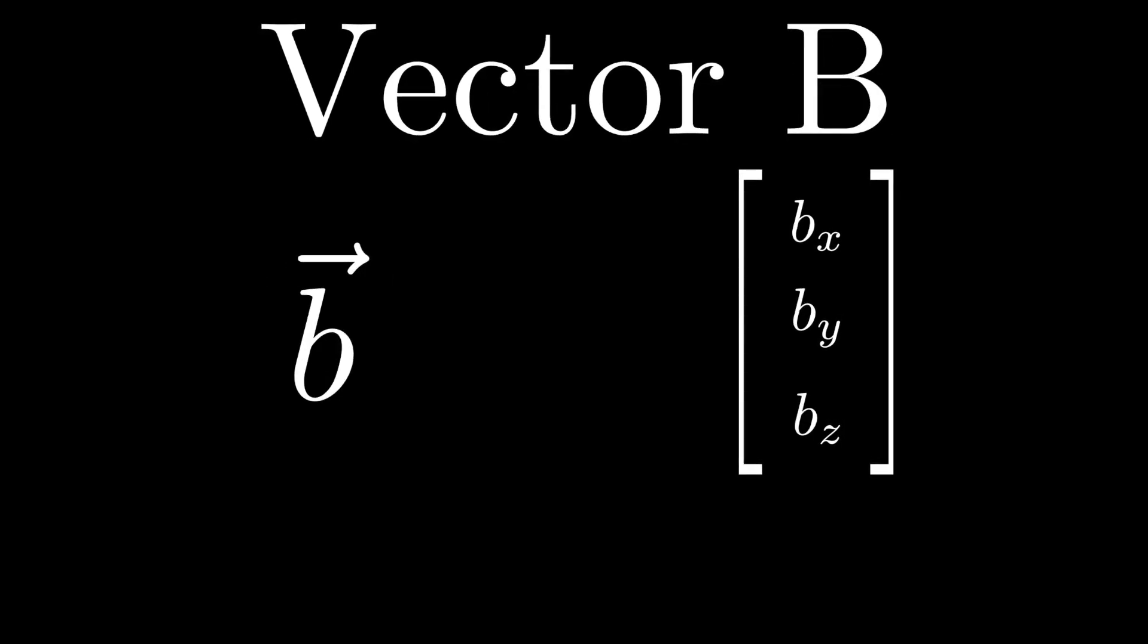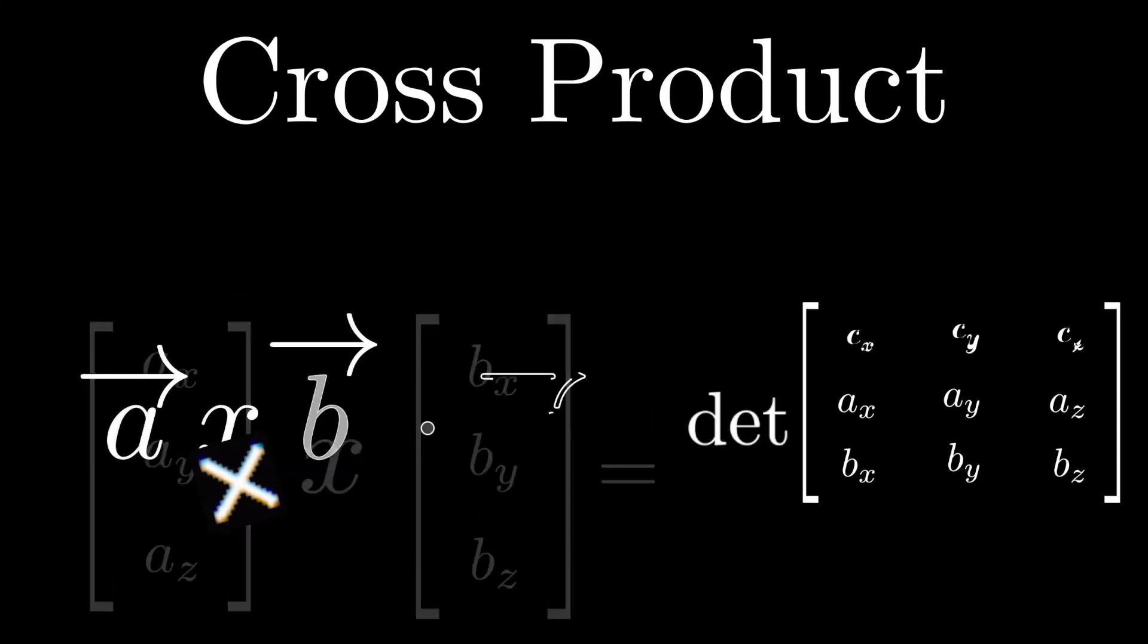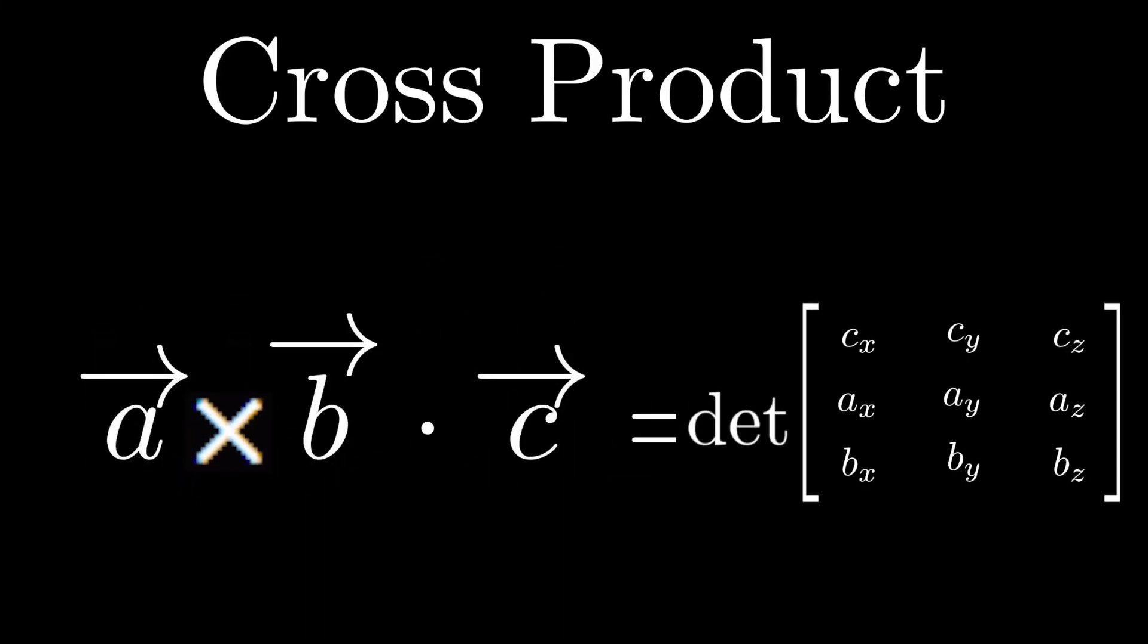For this problem, vector A can be represented as A with an arrow or a matrix of components. The same goes for vector B. You can get the cross product of two vectors by doing the determinant of the x, y, and z unit vectors represented as i, j, k on the first row, then in the second row the first vector, and then the third row the second vector. This part seems kind of irrelevant, but it's going to be important later on.